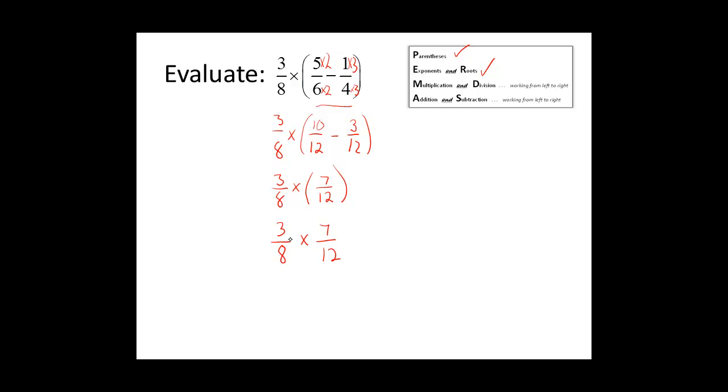We see that we have a common factor in the numerator and denominator of 3. We can divide this numerator by 3 and that denominator by 3. 3 divided by 3 is 1, and 12 divided by 3 is 4.